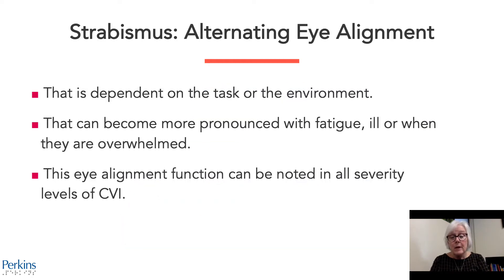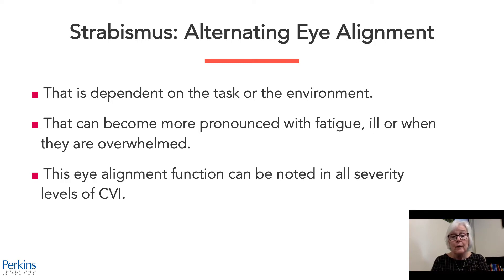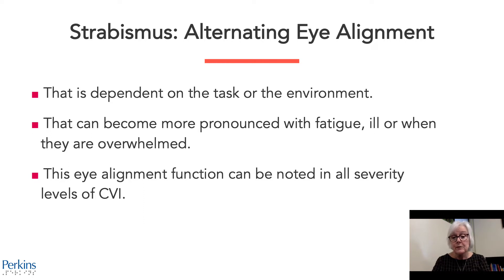Very common in CVI is strabismus with alternating eye alignment, where it's not a stable condition all the time but actually alternates between the eyes. We also put this under movement of the eyes in our assessment. This alternation is often dependent on the type of task or the type of environment. It can become much more pronounced with fatigue and illness or when the child is overwhelmed, and it can be a function noted in all severity levels of CVI.